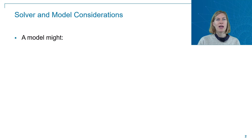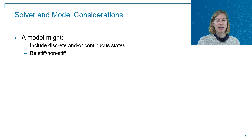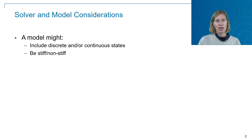Your model, independent of whether it is a Simulink model or also contains a Simscape network, can include discrete and/or continuous states and it might display stiff or non-stiff behavior. Stiffness itself is not an exactly defined term, but you can typically regard a model as stiff if it contains rapidly varying timescales, so if it contains both slower and faster dynamics.